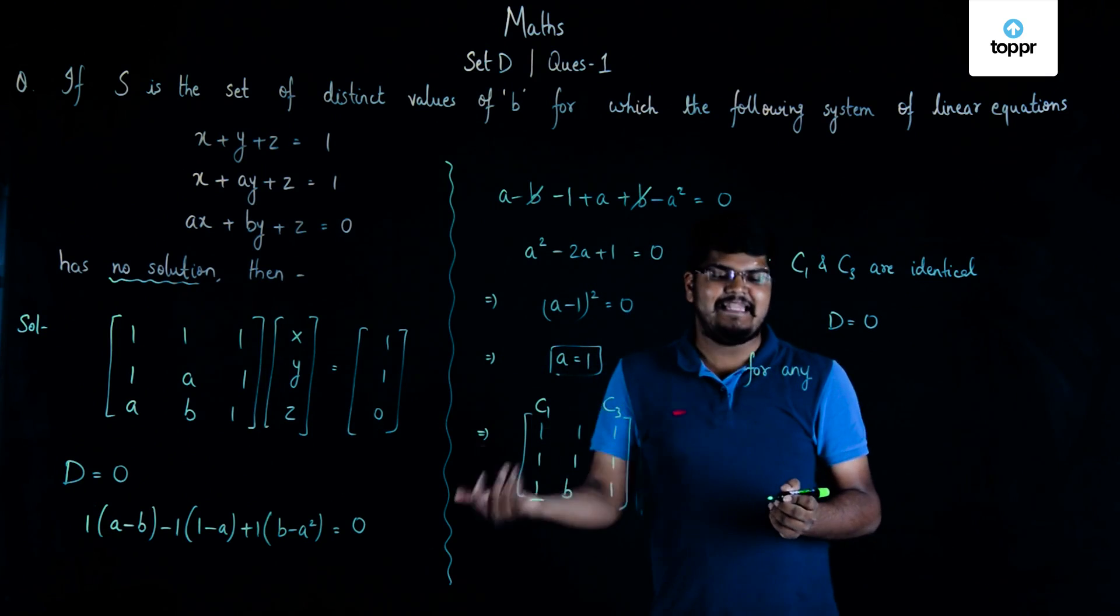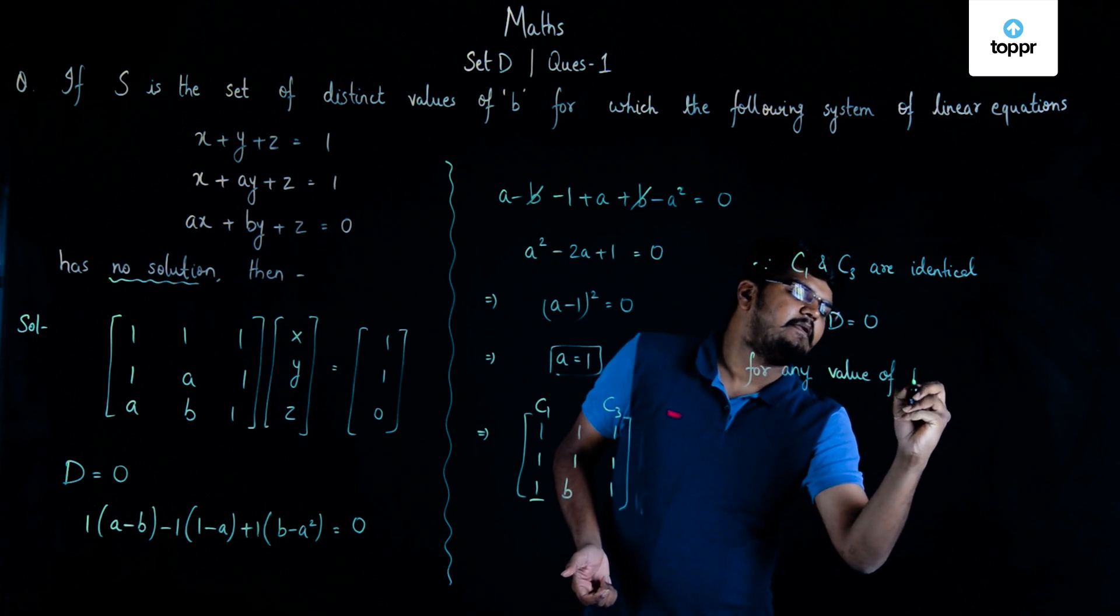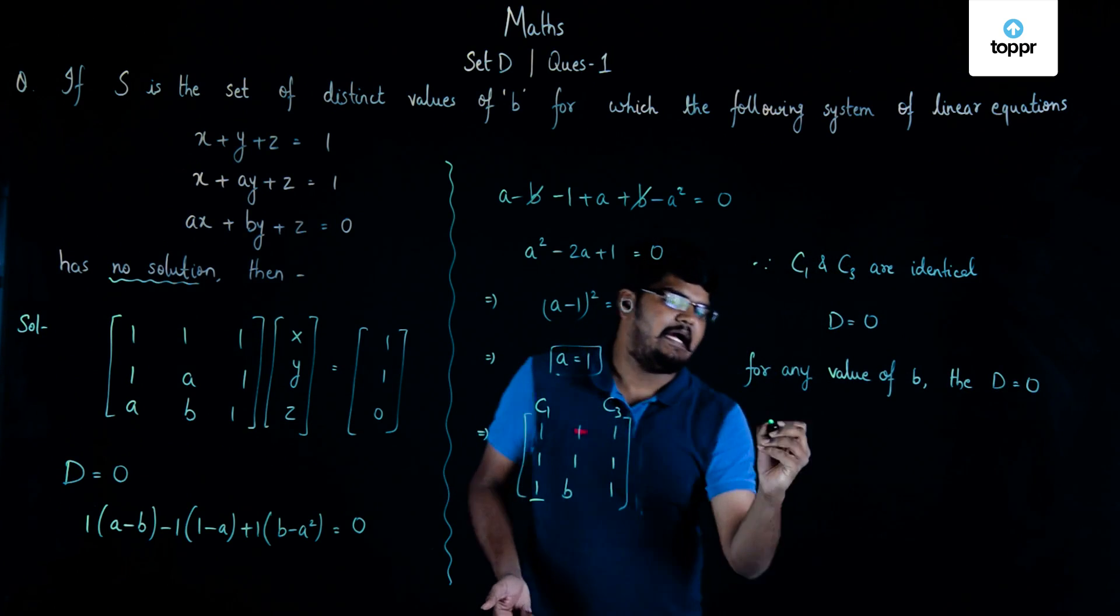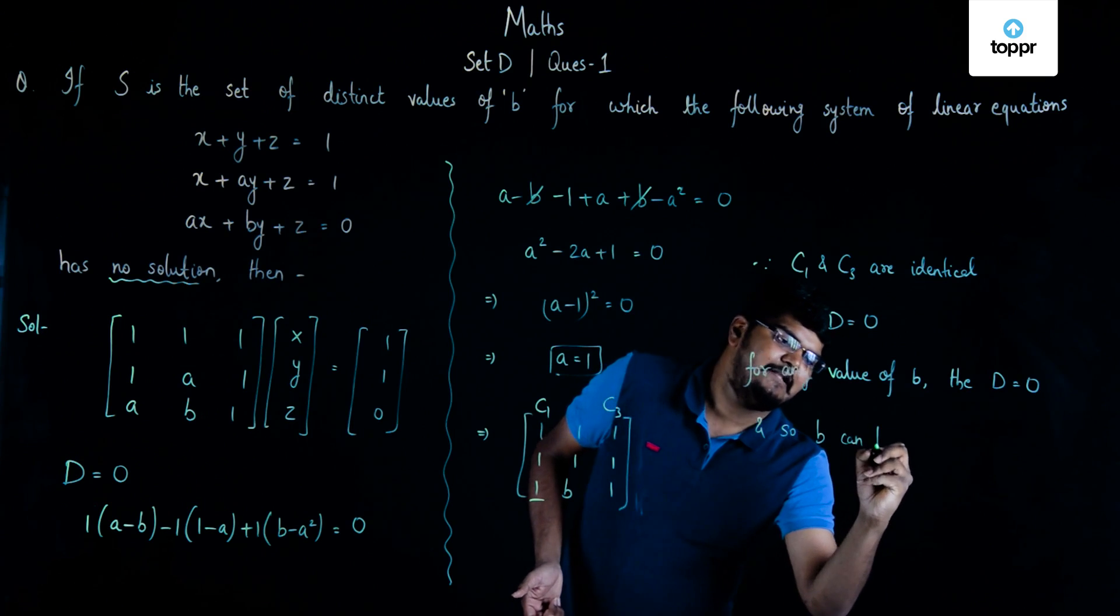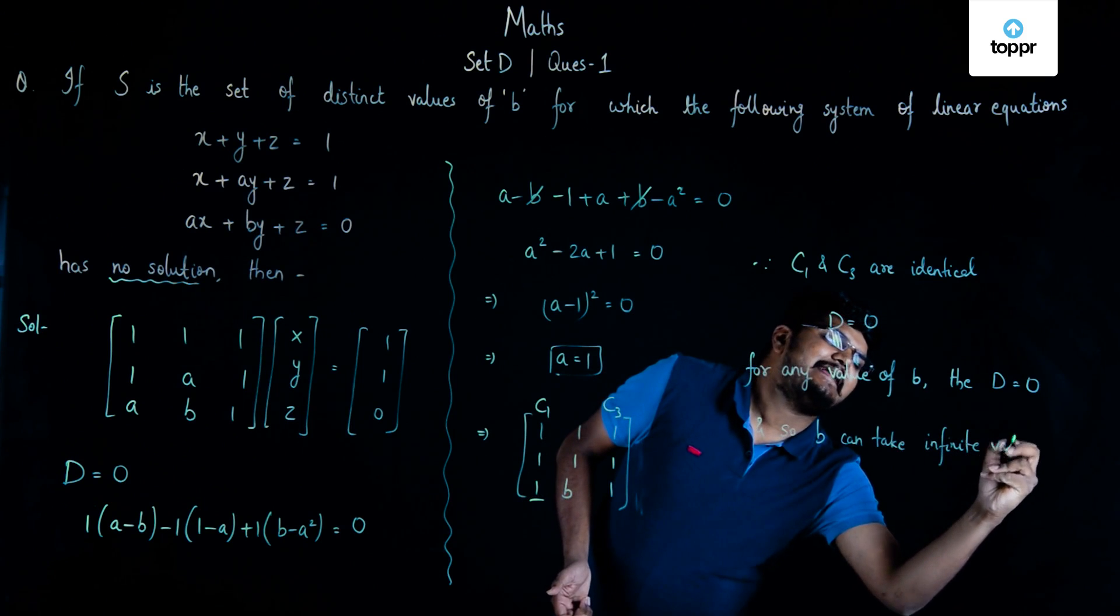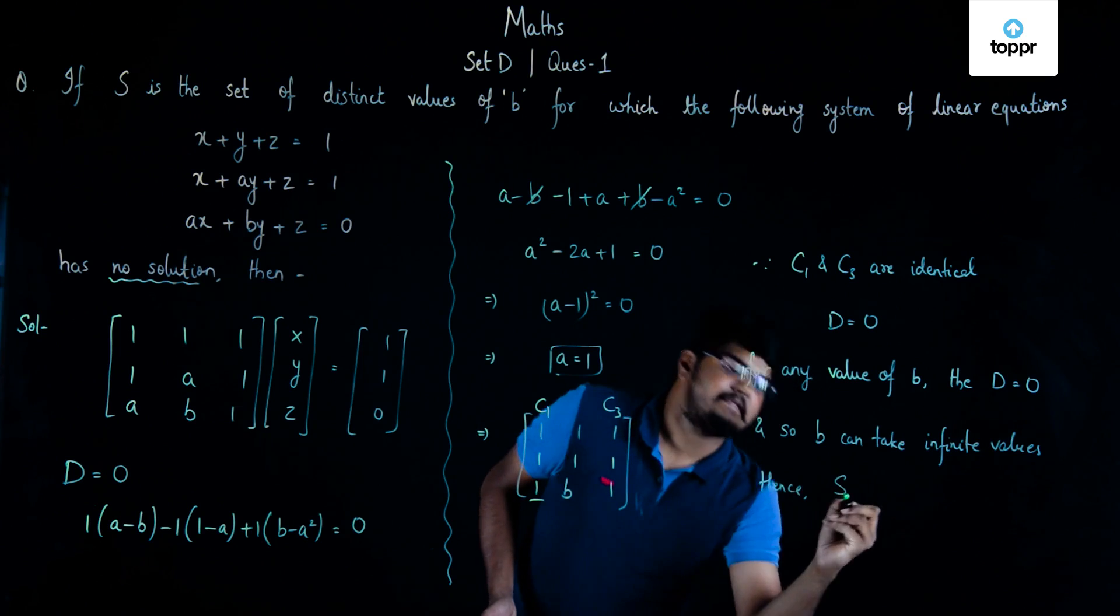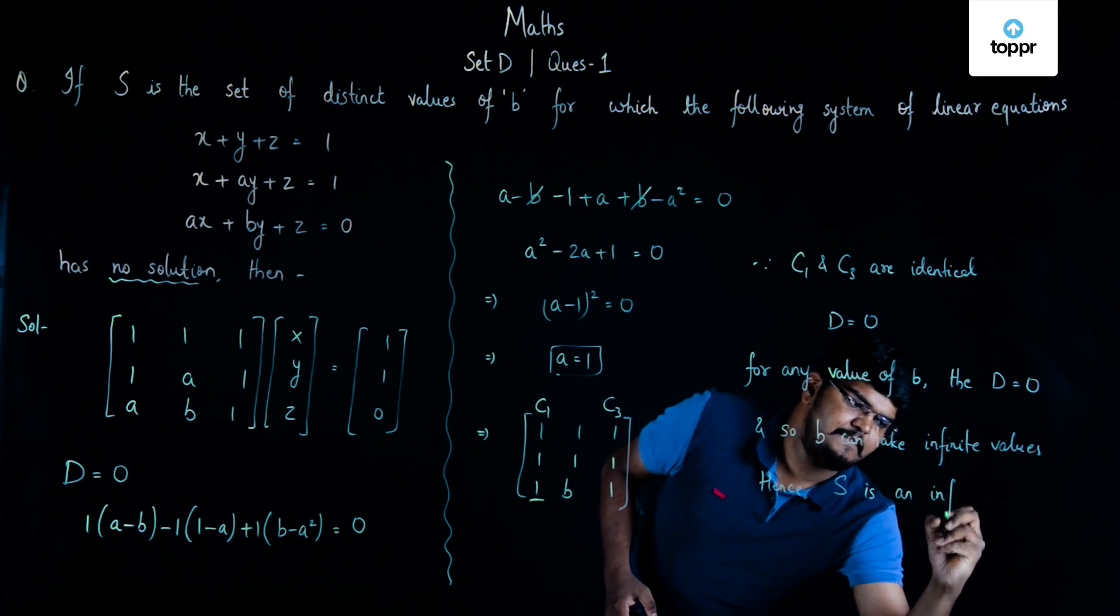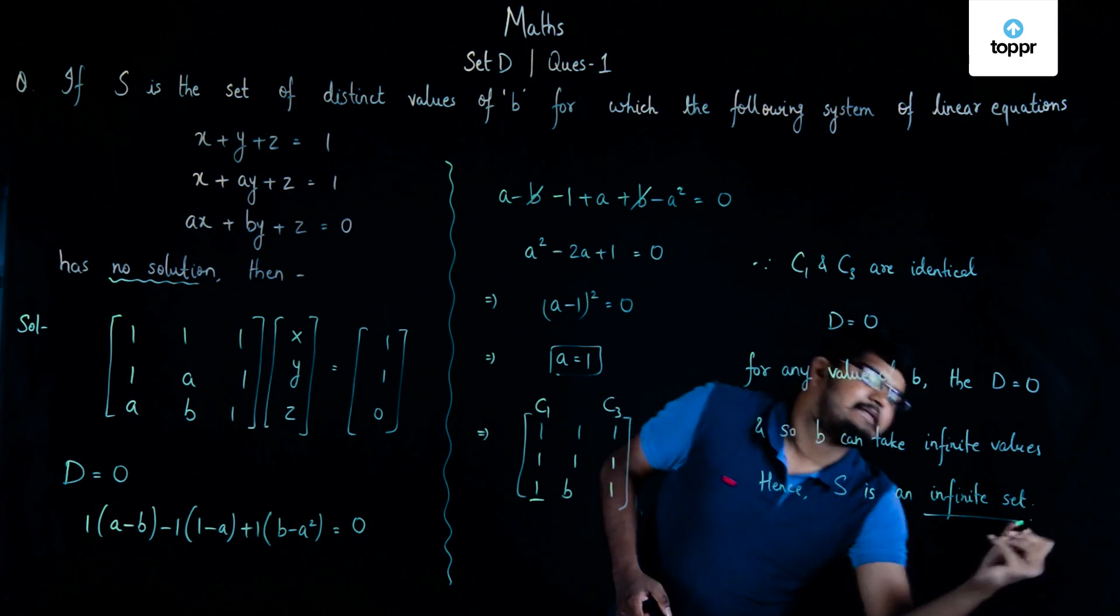...because now the value of B will not matter as C1 and C3 are exactly identical. This B can have any values. For any value of B, the discriminant will be equal to 0, and so we can take infinite values. Since we can take infinite values, hence S, the set which is given to us, is an infinite set. So, the correct answer is infinite set.